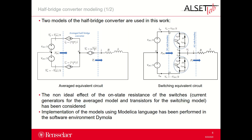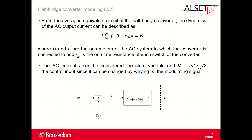The modeling approach of the half-bridge converter is illustrated in this slide. Two models of the converter are used in this work: the averaged model and the switching model. The non-ideal effect of the on-state resistance of the switches — current generators for the average model, and transistors for the switching model — has been considered. The implementation of the models using Modelica language has been performed in the software environment Dymola. From the average equivalent circuit, the dynamics of the AC output current can be described by this equation, where R and L are the parameters of the AC system, and R_on is the on-state resistance of each switch. The AC current I can be considered the state variable, and V_T the control input, since it can be changed by varying M, the modulating signal.